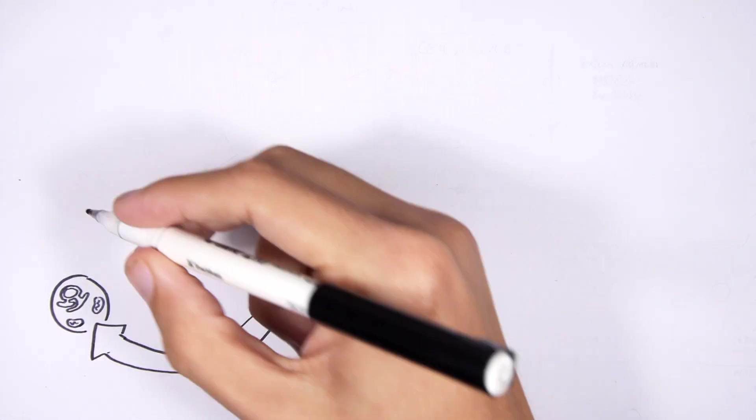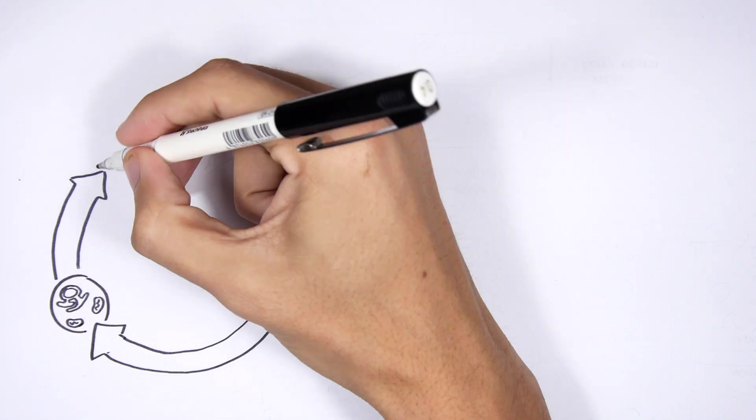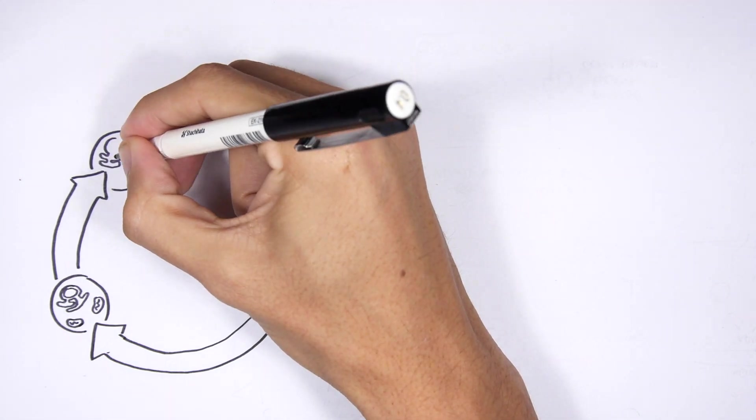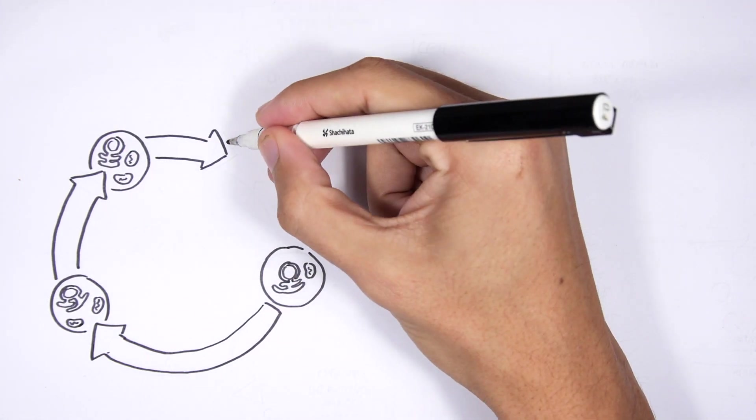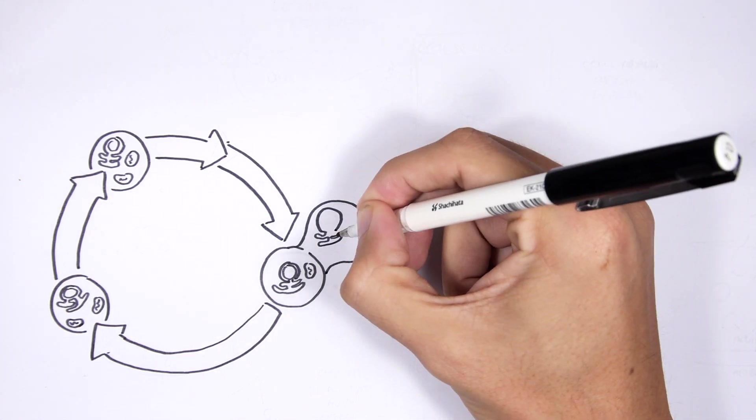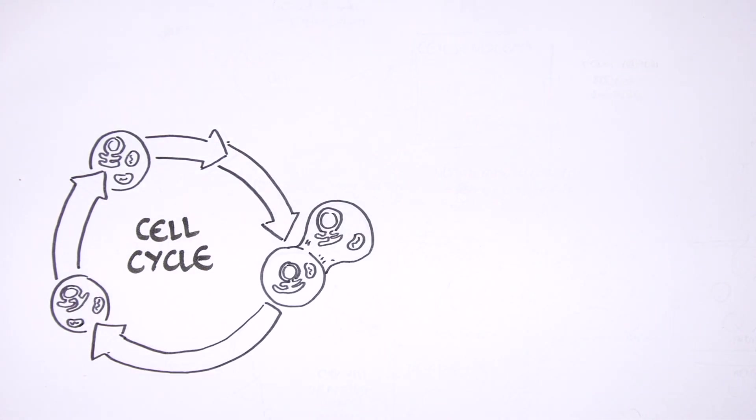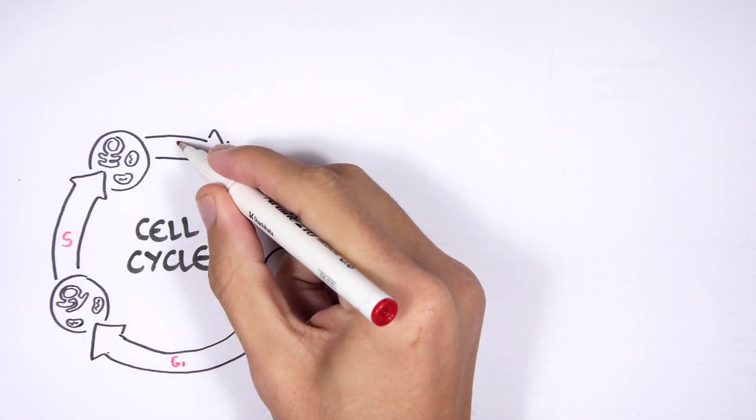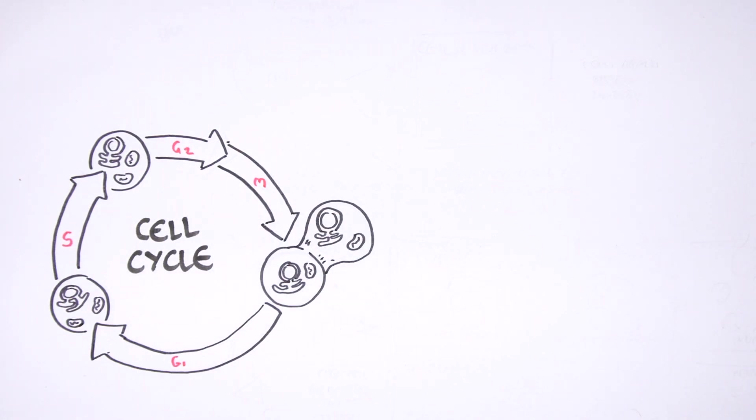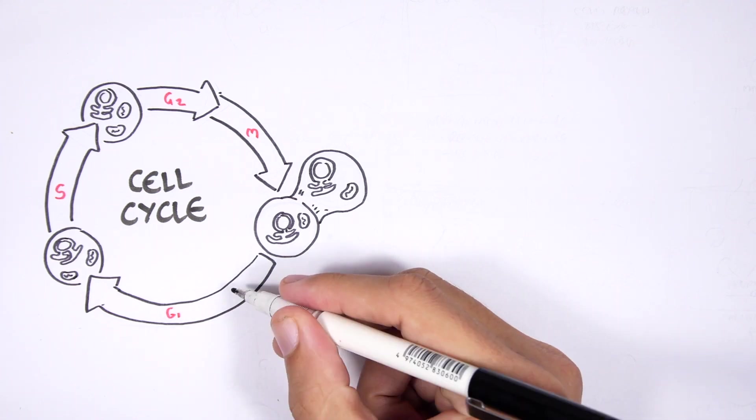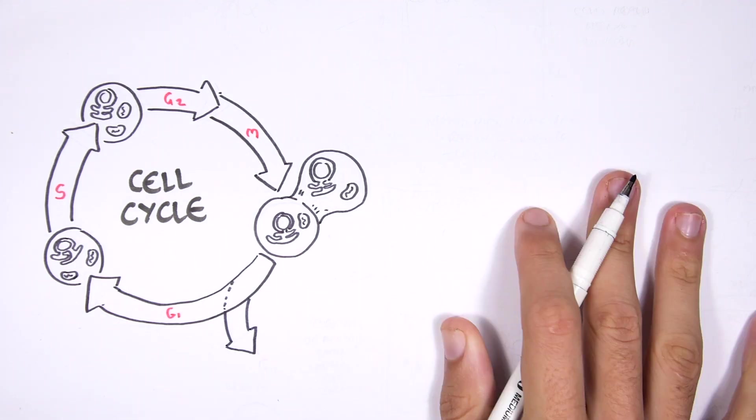These mitotic cells will double its organelles, it will double its DNA and then it will divide into two identical cells. So this is known as a cell cycle. You have the G1 phase, the S phase, the G2 phase and the M phase. So this is the cell cycle where the cell divides.